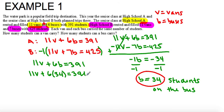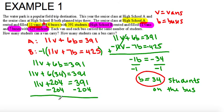Alright, so now I multiply my 6 times 34. 6 times 34 is 204. So I have 11V plus 204 equals 391. I have to get V by itself so I subtract 204 on both sides. So I have 391 minus 204 is 187, so 11V equals 187.